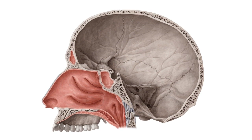Here we can see the lateral wall of the nasal cavity and some of the structures we're going to be covering today, such as the nasal conchae and the meatuses between them. We can also see the sphenoidal sinus and the frontal sinus.